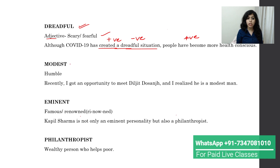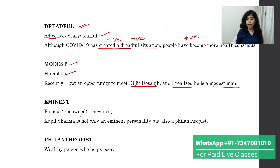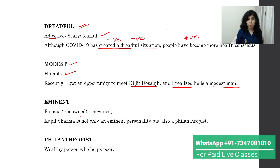The next word is 'modest,' which means humble — a person who is down to earth, very humble, even soft spoken. For example: 'Recently I got an opportunity to meet Diljeet Dosanj, and I realized he is a modest man.' He is a humble, down-to-earth person. You can use all three words — humble, down to earth, modest — for the same meaning.